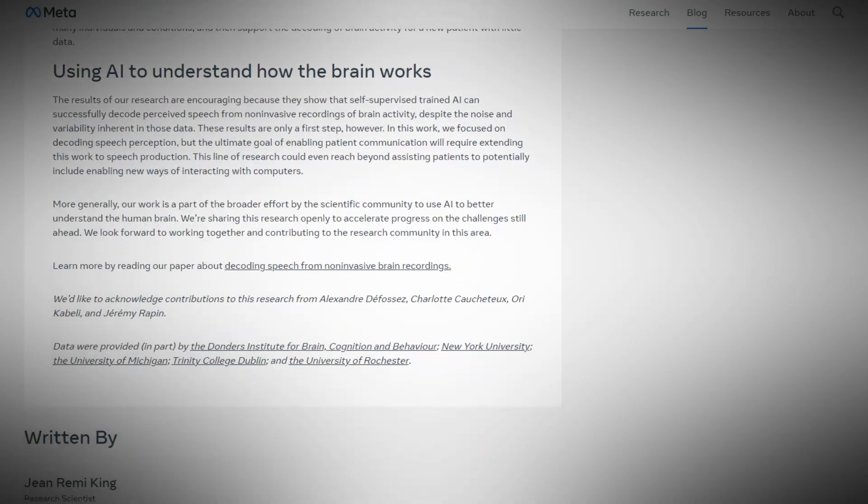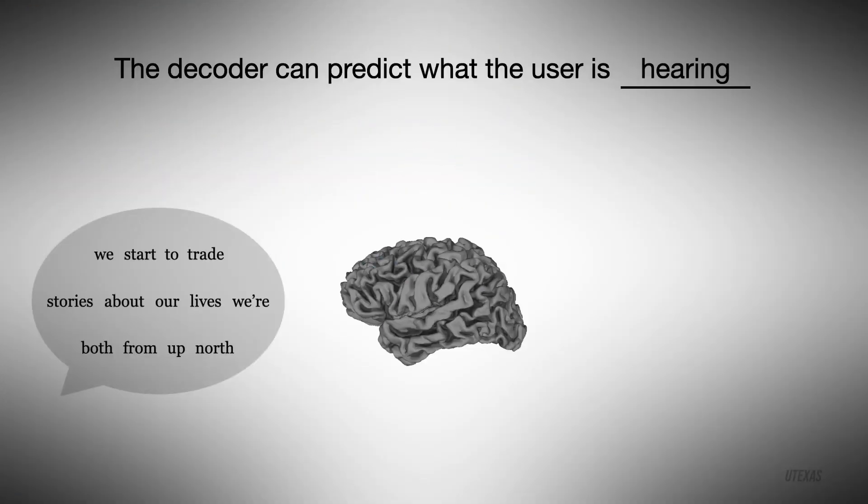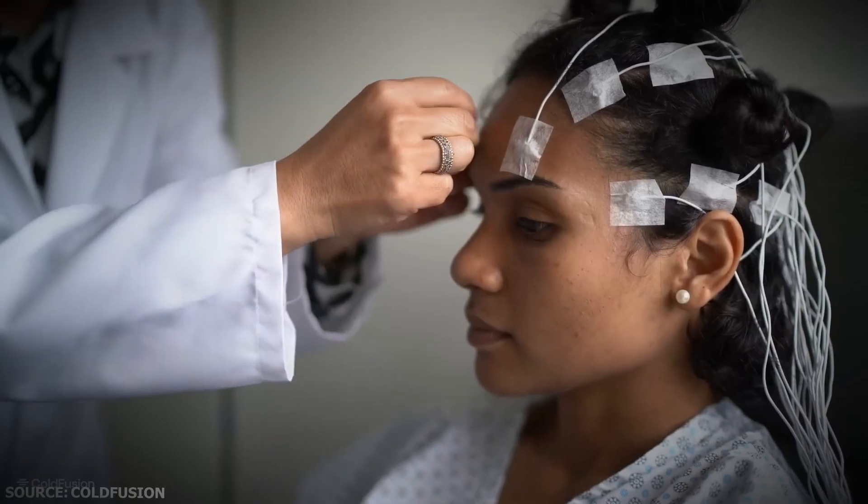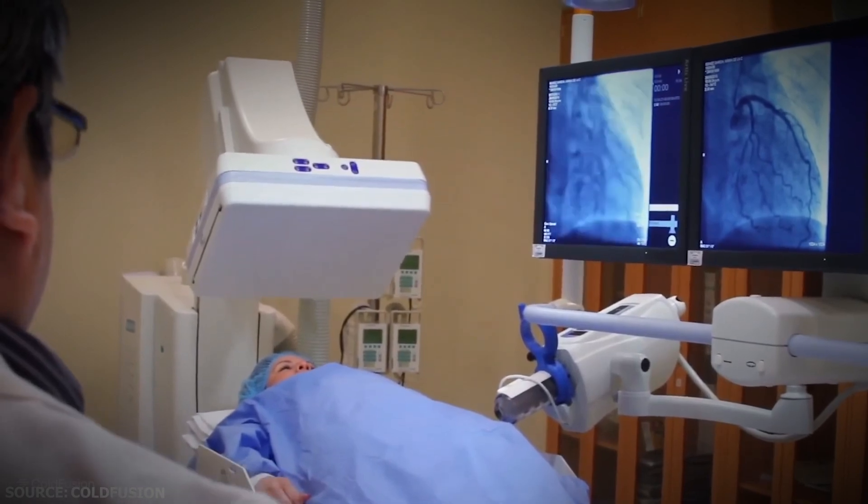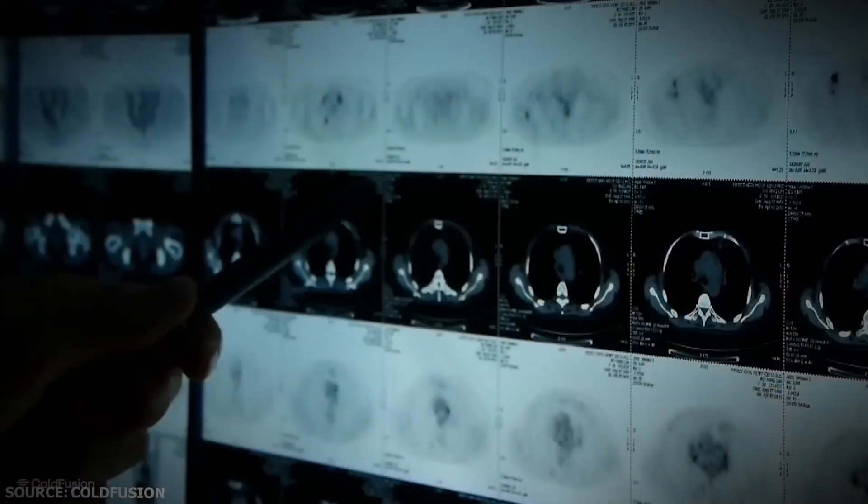But how? As I always say, come along to find out. In October, Meta released a paper on AI systems that can analyze a person's brainwaves and predict what that person is seeing. And you know what was the real banger? They were able to do this in real time.